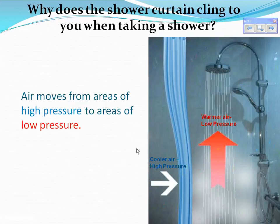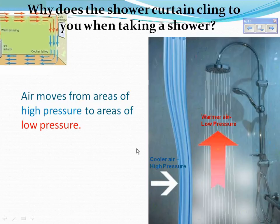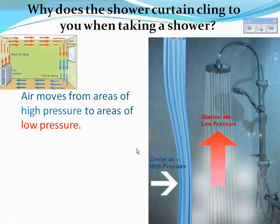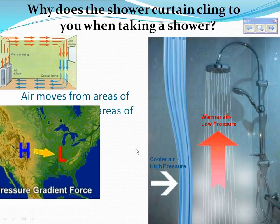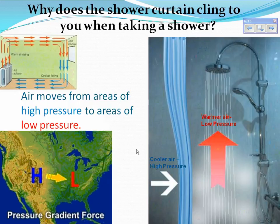Therefore, air moves from areas of high pressure to areas of low pressure. This can also be seen in the example of the heater in a room, and it's also seen with our weather patterns. Whenever we have weather movement, air masses move from areas of high pressure and take the place of areas with low pressure.